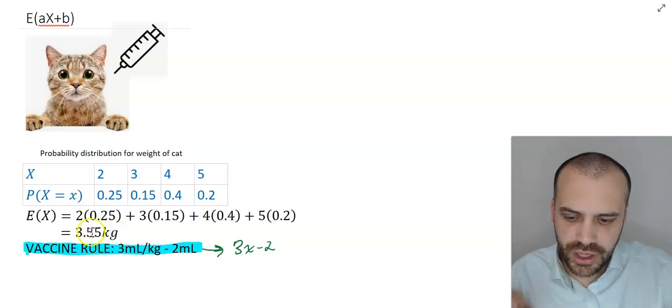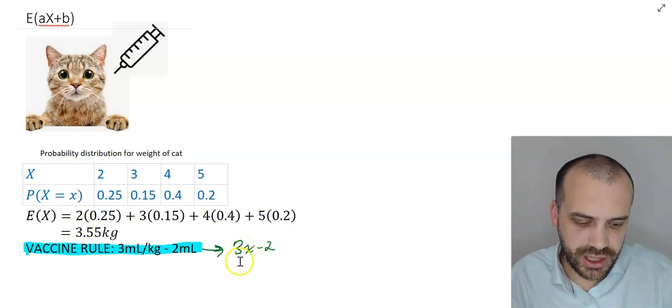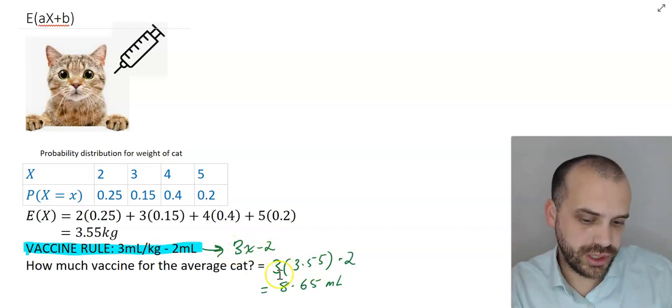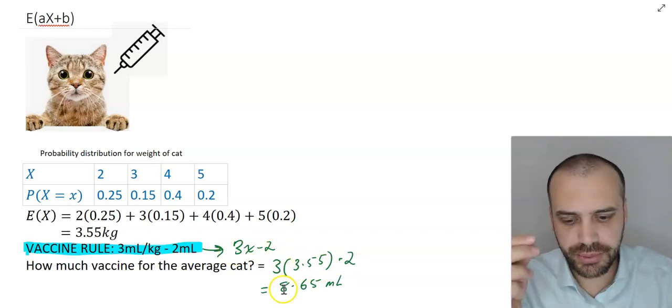It's pretty straightforward. You substitute the average weight of a cat into this formula here. If we substitute 3.55 into 3x minus 2, we get a value of 8.65. The average cat gets a vaccine of 8.65 milliliters.